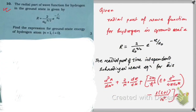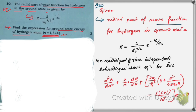Question number ten: the radial part of the wave function for the hydrogen atom in the ground state is given. We need to find the expression for the ground state energy of the hydrogen atom. At the ground state, n = 1 and l = 0. The given information is the radial wave function R, and the radial part of the time-independent Schrödinger equation for this case is also given.